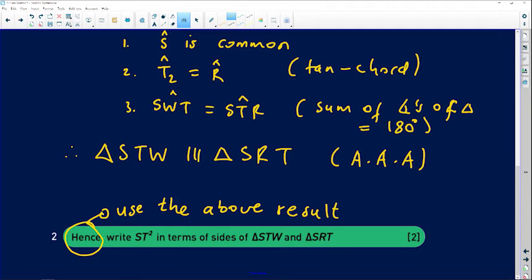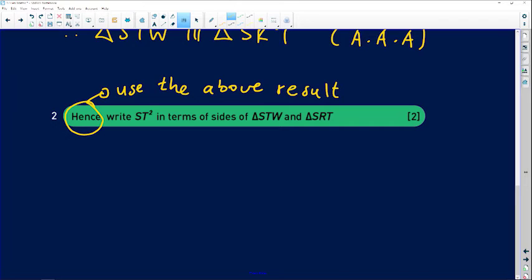So what you're simply going to do there is first of all go to the fact that triangle STW is similar to triangle SRT. Now if these triangles are similar, then the sides of these triangles are in equal proportions. So what I'm simply going to do is I'm going to find the ratios of the corresponding sides. The ratio of the side ST to the ratio of the side SR will be equal to the ratios of the other corresponding sides.